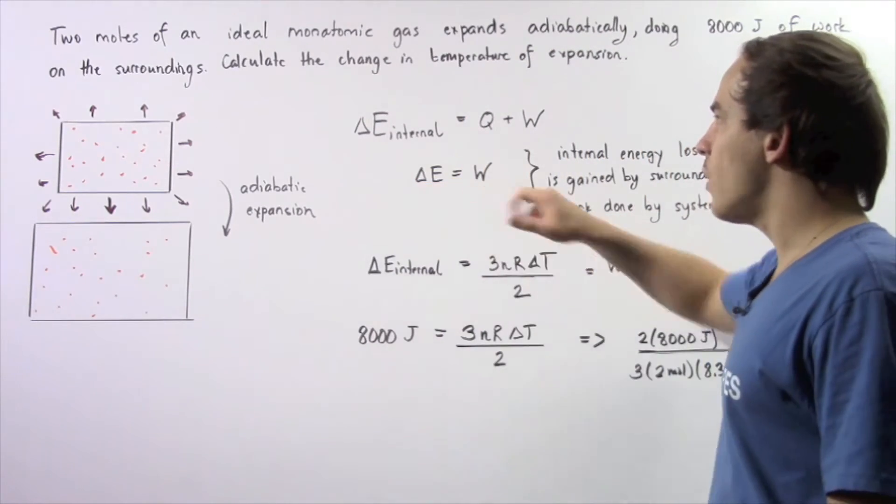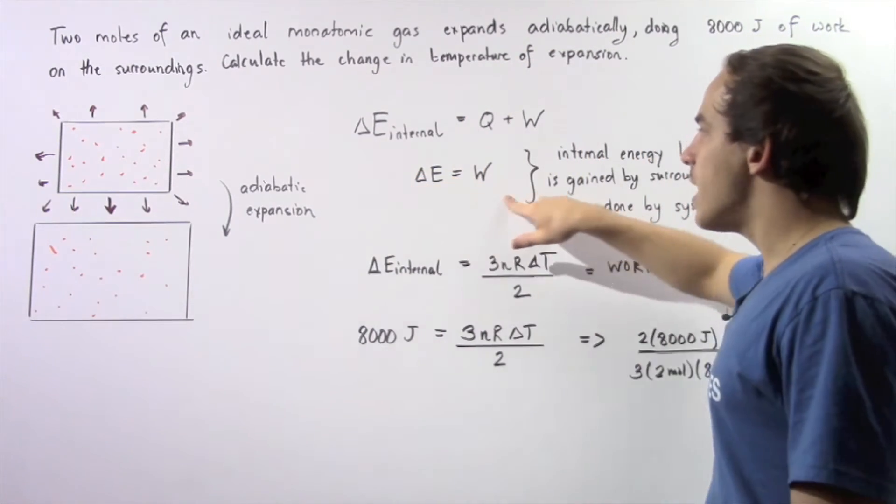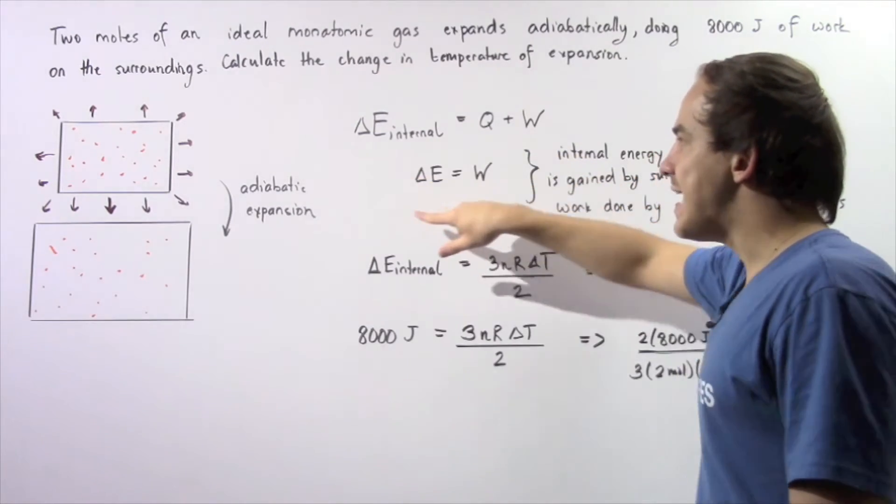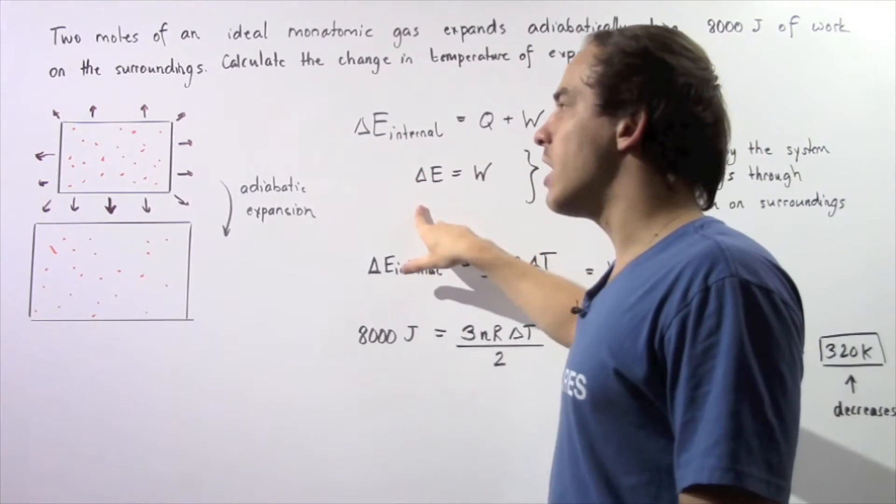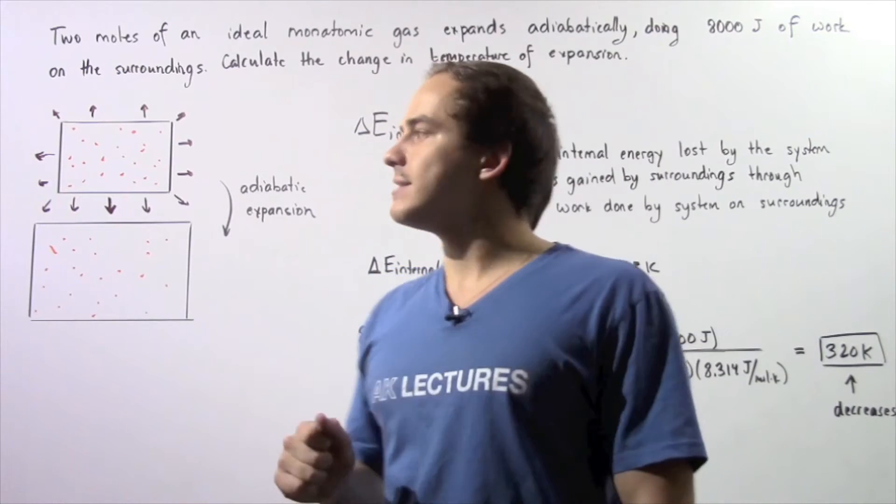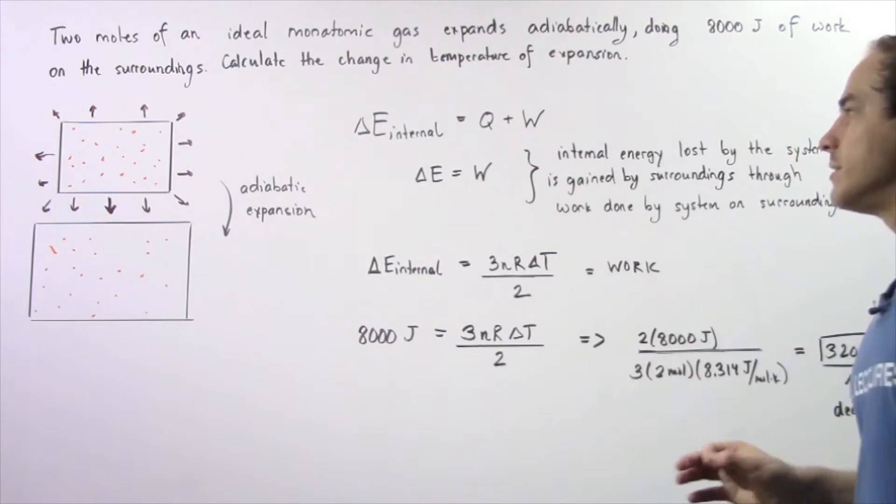That means our equation becomes: the change in internal energy of our ideal monatomic gaseous system equals the work done.